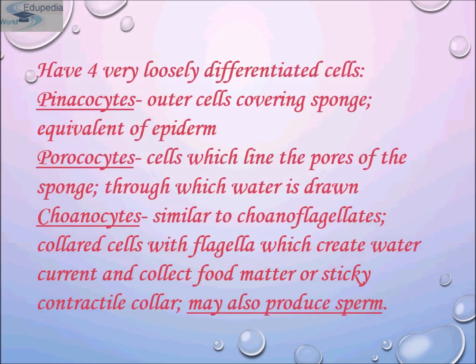The morphology of sponges includes four loosely differentiated cell types. Pinacocytes are the outer cells covering the sponge, equivalent to the epidermis. Porocytes are the cells which line the pores of the sponge through which water is drawn. Choanocytes are similar to choanoflagellates — collared cells with flagella which create water currents and collect food matter; their contractile collar may also produce sperm.